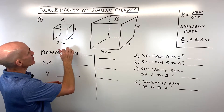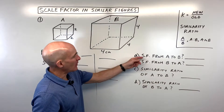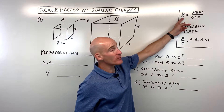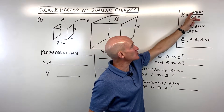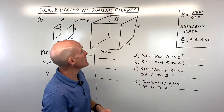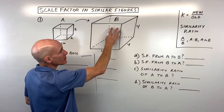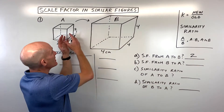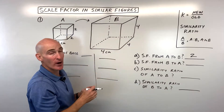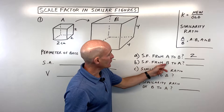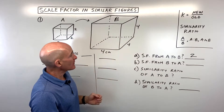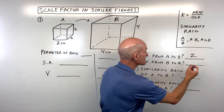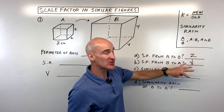Let's look at this figure. When we go from A to B, what's the scale factor? k is often used for the scale factor — it's the ratio of the new figure over the old figure. Going from A to B, B is the new figure: four divided by two gives a scale factor of two. We're doubling everything to get from two to four. Going from B back to A, the new figure is two and the old is four: two divided by four is one half. Notice that two and one half are reciprocals of each other.